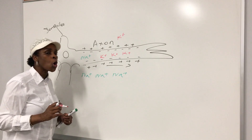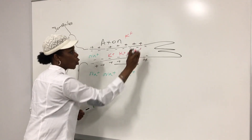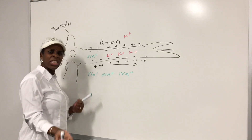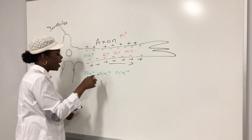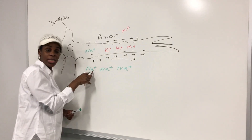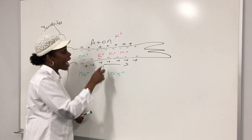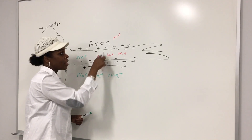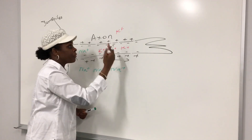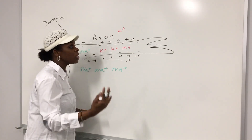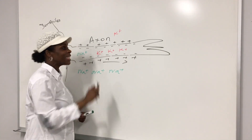We have some channels called leak channels — those are open channels all the time; they don't have doors. If the leak channel is a sodium leak channel, then sodium will move into the cell because it's high outside. If you have a leak channel for potassium, then naturally, because of high concentration of potassium inside and low outside, potassium will move out — things move from areas of high concentration to low concentration. That's the leak channel; it's always open.